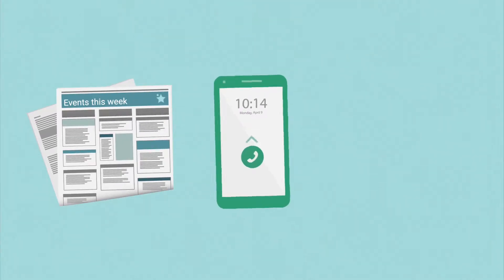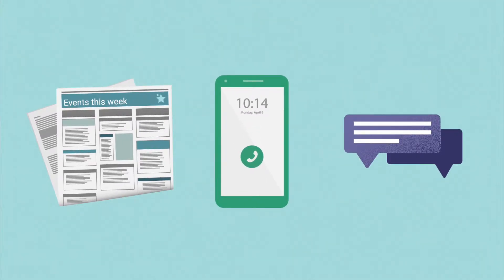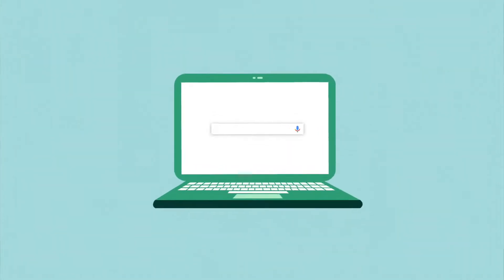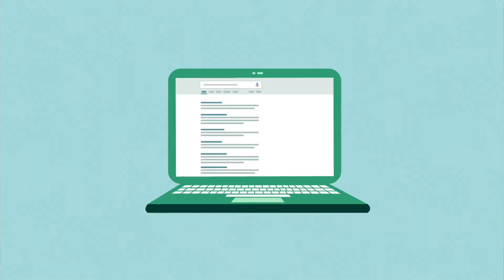Imagine you are getting together with a friend and you want to find some activities. You could look through the local newspaper, make phone calls, or ask around. Or you could search the internet. To search the internet, use a search engine. There are several different search engines, but this activity will use Google search.